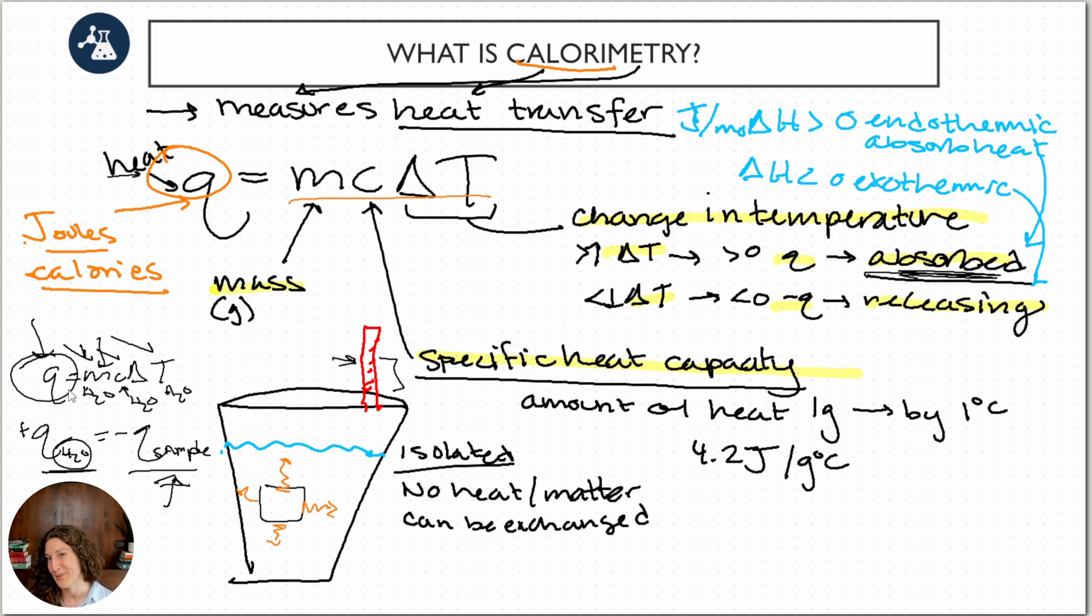If you're calculating the heat of the water absorbed by the water, we need to use the mass of the water, specific heat of the water, and change in temperature of the water. If you're measuring the heat released by the sample, we would need to know the mass of the sample, the change of temperature of the sample, and the C, the specific heat capacity of the sample.